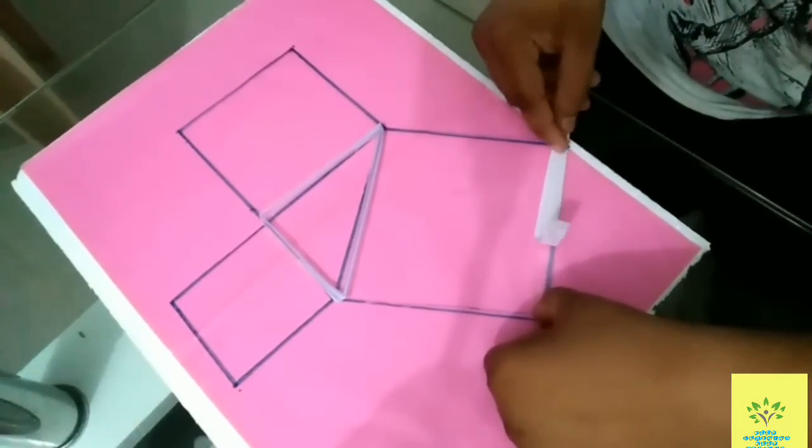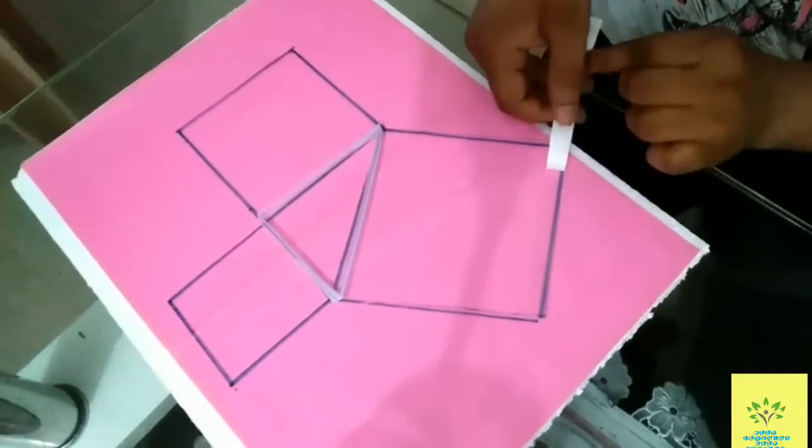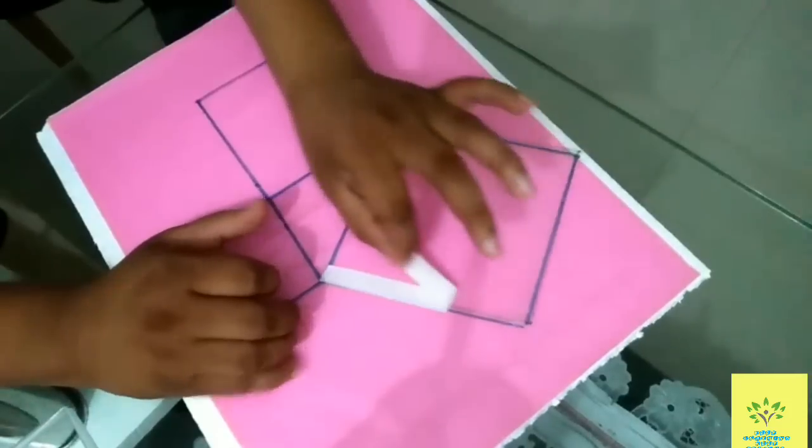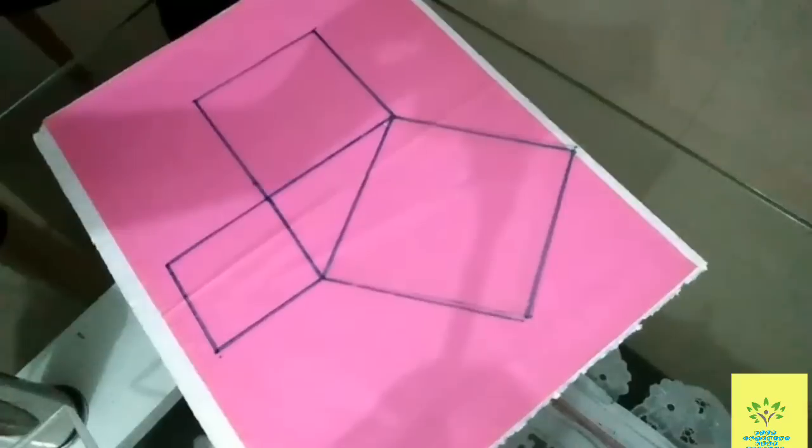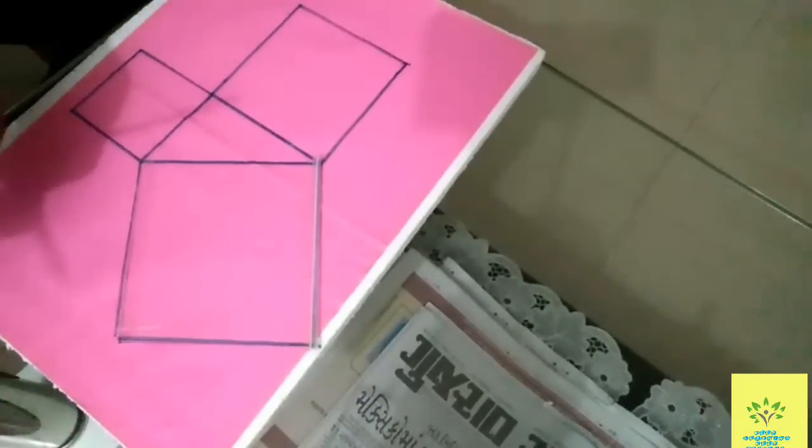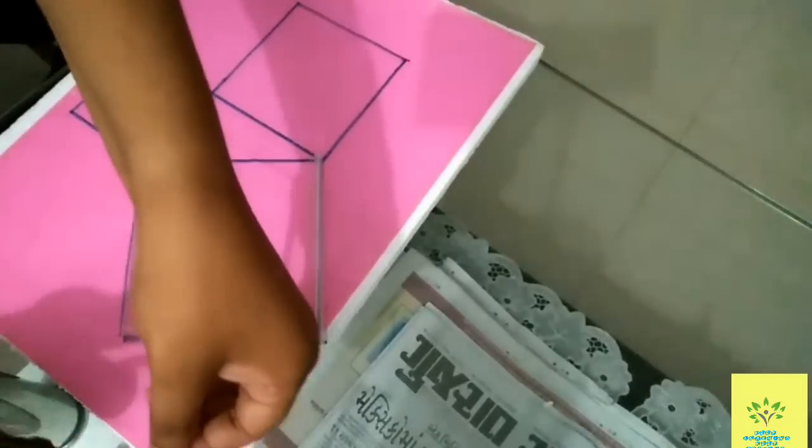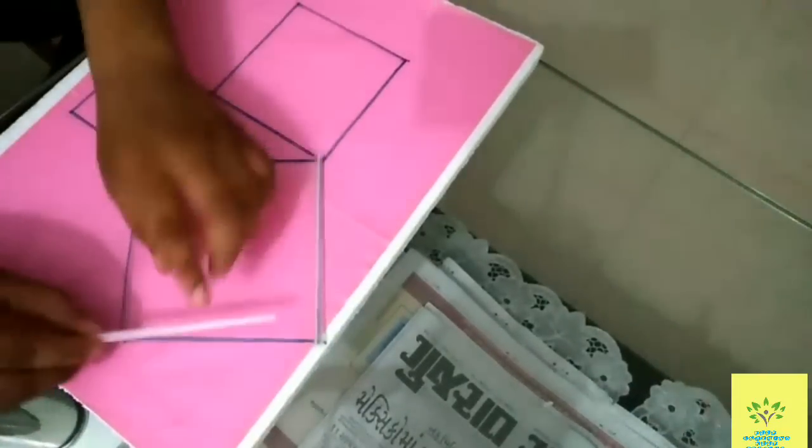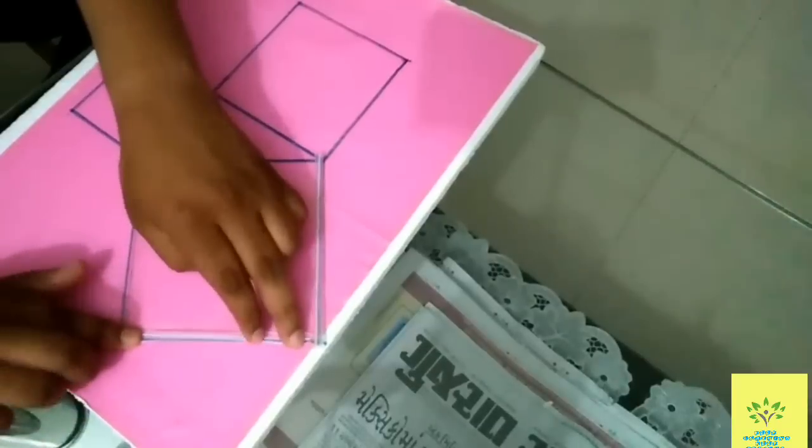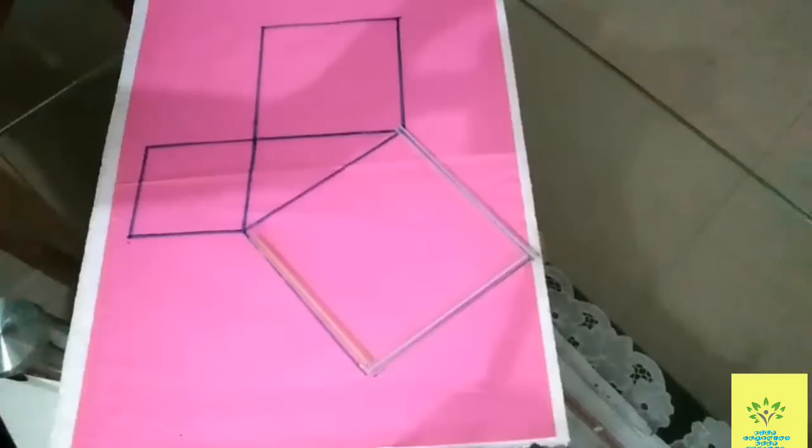Now you can start pasting double-sided tape on all the lines where you have drawn them. On the double-sided tape, you will paste the straws so the edges are covered with straws.